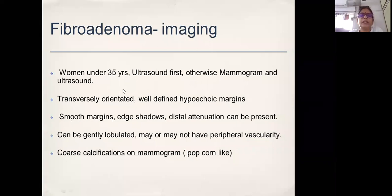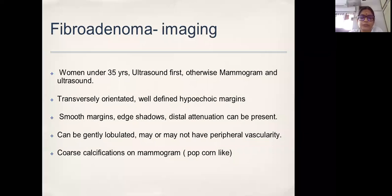Even today there are no clear guidelines for most people about what to do with these lumps. Generally as a rule, if it is a symptomatic lump in the breast in women under 35, we should do an ultrasound first. On ultrasound, if there is any suspicious feature, then a mammogram should also be combined. Otherwise an ultrasound is fine. The majority of fibroadenomas have a distinctly benign appearance — well-circumscribed, transversely oriented, with clear margins.